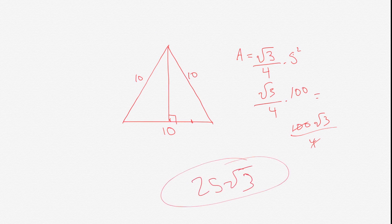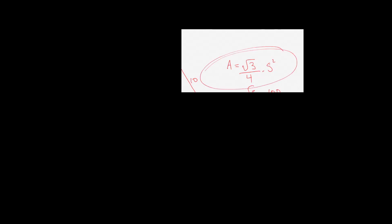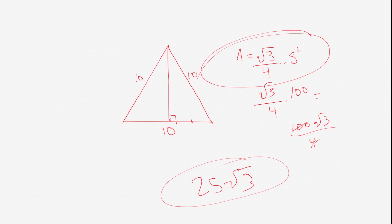So those are the two ways you can get it. You could do it the long way, which is the first way we did it, or if you could remember this formula, you could do it that way.